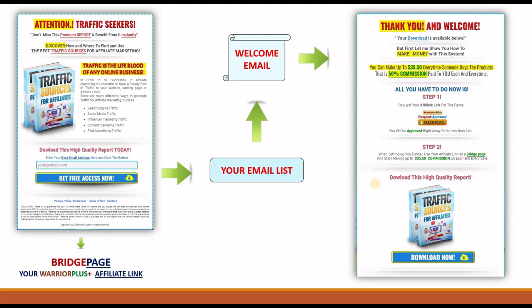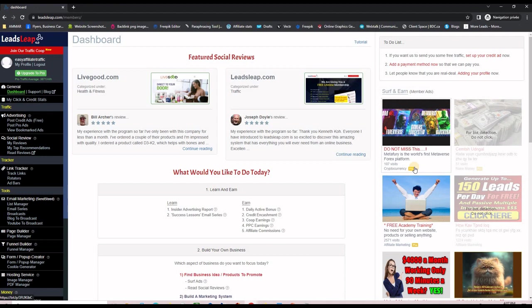You can make up to $35 every time someone buys the products. Two things happen when subscribers enter their email address: they are added to your email list and sent a welcome email, and they are immediately sent to a bridge page which is your Warrior+ affiliate link for this offer, earning you up to $35 commission.